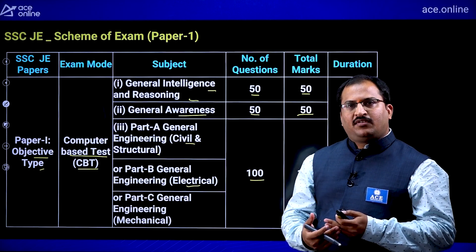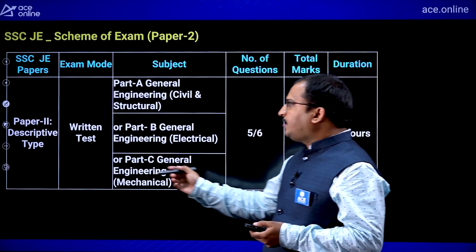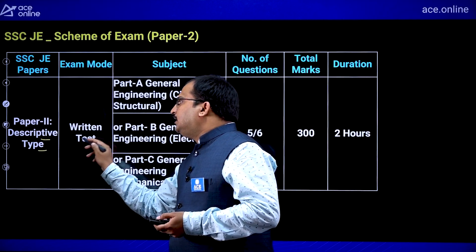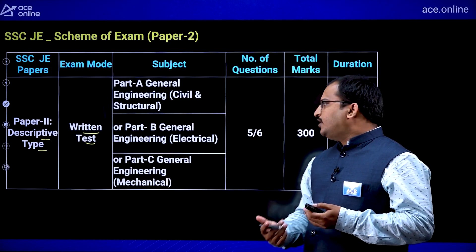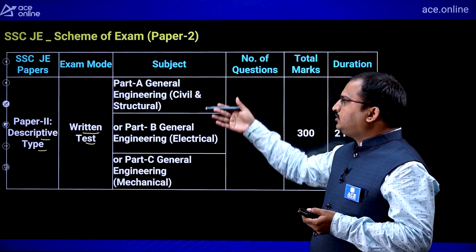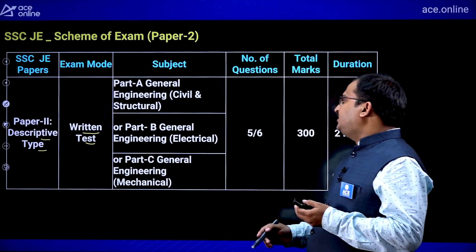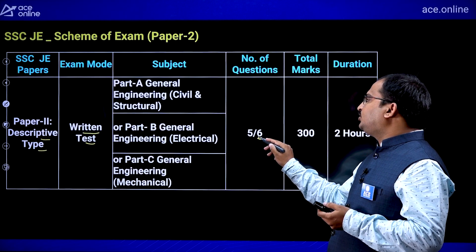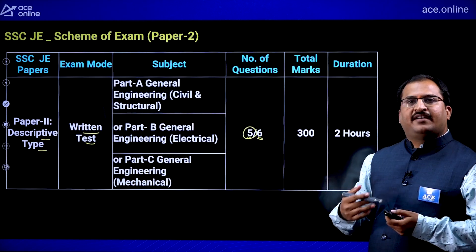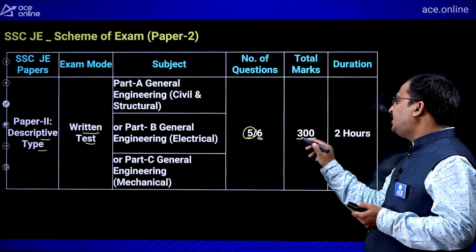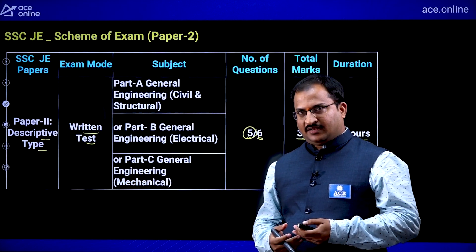Once you clear the Paper 1 cutoff, you have to write a descriptive type of examination which is Paper 2 — a paper-based test. Three parts are there; you choose your respective stream and write the paper. There are 6 questions, out of which 5 need to be answered. Each question carries 60 marks, making a total of 300 marks, with a 2-hour duration.